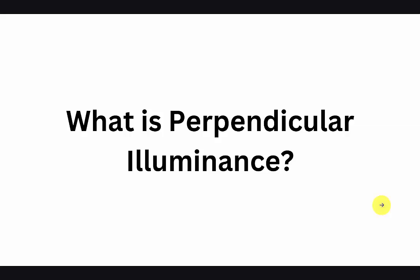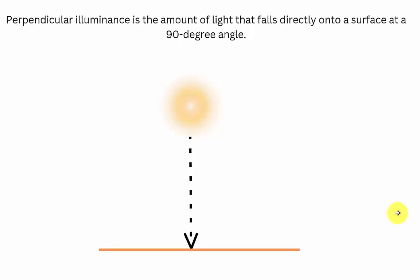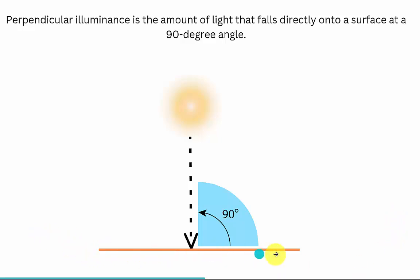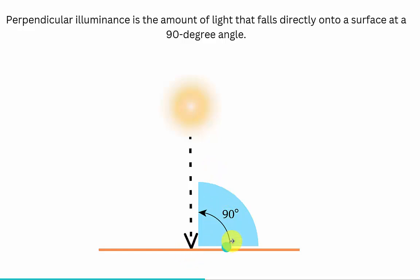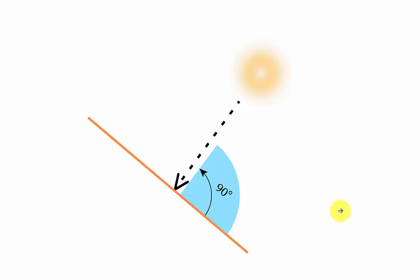Let's get started. Perpendicular illuminance is the amount of light that falls directly on a surface at a 90 degree angle. With this diagram, don't get confused that the surface has to be horizontal — we are not talking about the orientation of the surface here. We are talking about the light that will be hitting the surface at a 90 degree angle. The surface can even be a vertical surface like this, but if we are performing perpendicular illuminance we are calculating the amount of light that is falling at 90 degrees on that surface.